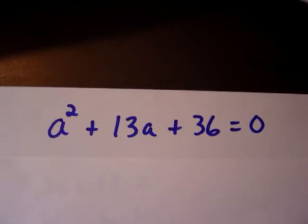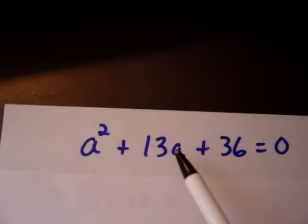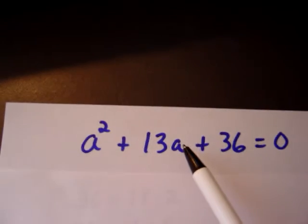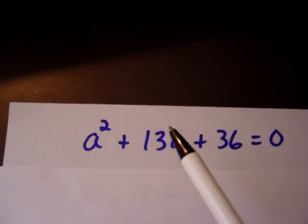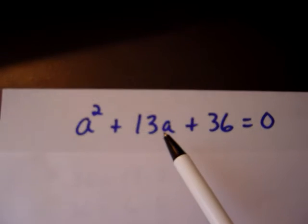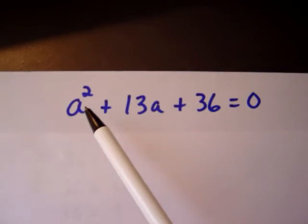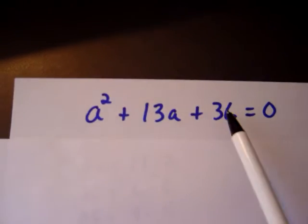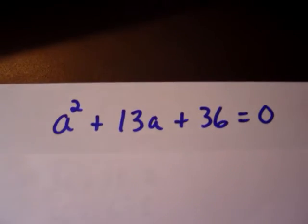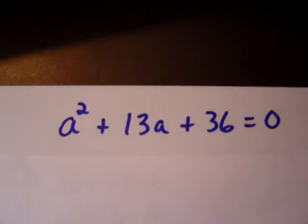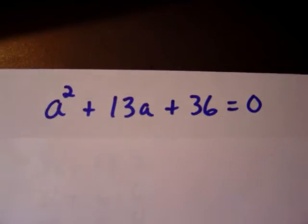The problem, really, is that we have both an a squared term and an a to the first power. If we just had a by itself, we'd be a lot better off. The way we can do that is through factoring. The first thing we want to look at is whether there is a common term between these three that we can factor out right away. It turns out there is not, so we're going to break it up into the product of two binomials.